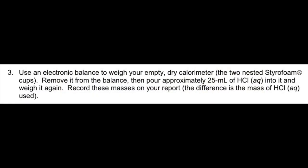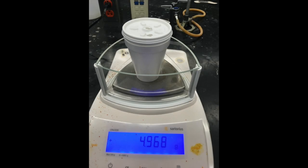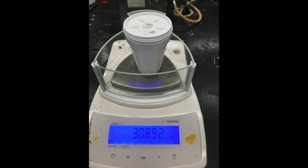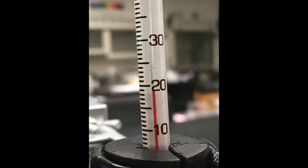We will be using magnesium metal and one molar HCl for our reactants. First, we weigh the empty calorimeter. We then add 25 milliliters of one molar HCl into the calorimeter and weigh it again. This is the mass of the calorimeter with the HCl. We measure the temperature of the solution inside the calorimeter — this is the initial temperature before the reaction takes place.